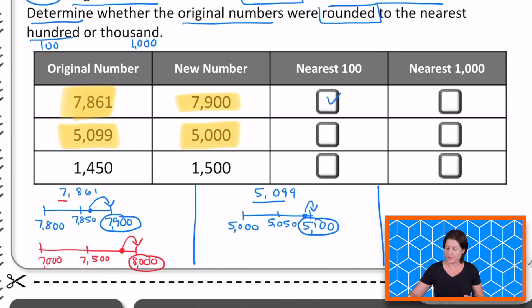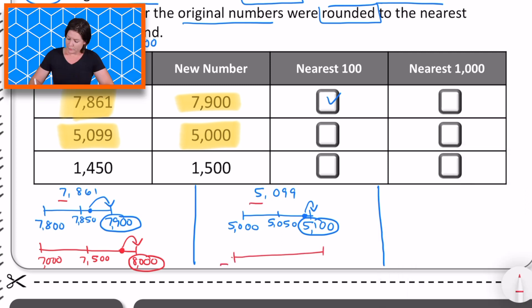It must be rounding to the nearest thousand. So let's check that. We have five thousands. So that would be between 5,000 and 6,000 and halfway would be 5,500. Well, 5,099 is really pretty close to 5,000 here because it's before the halfway mark we're rounding down to 5,000. So in this case, we're rounding to the nearest thousand.